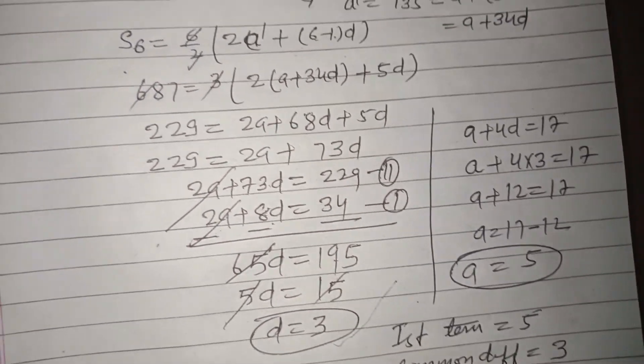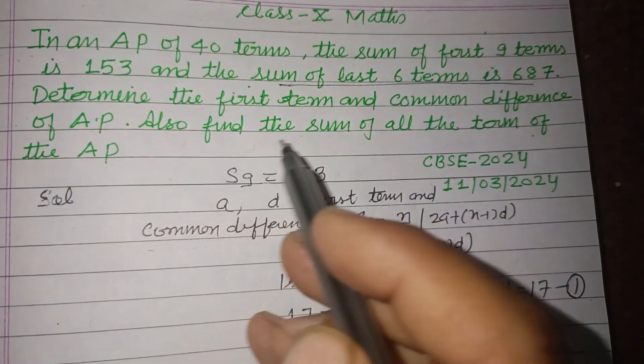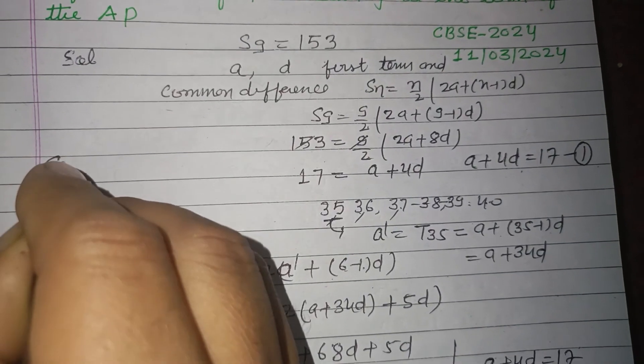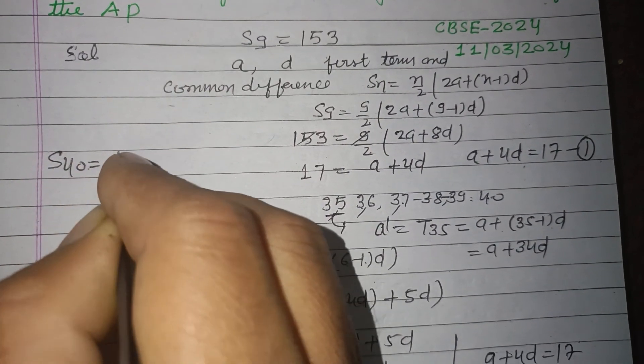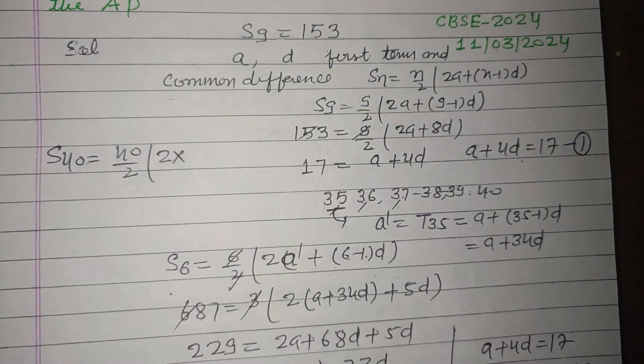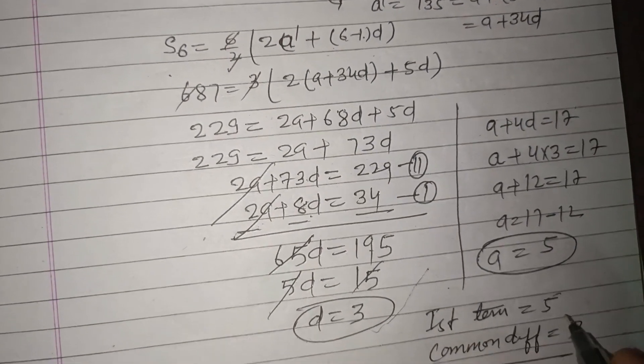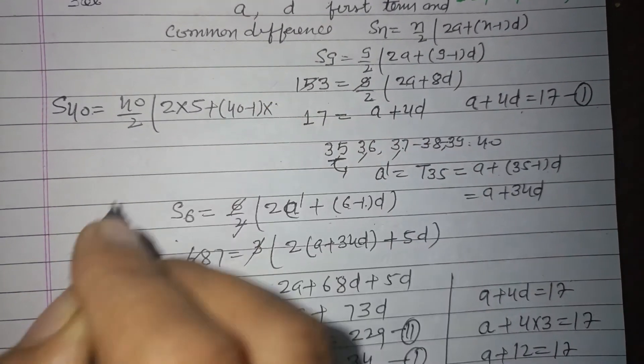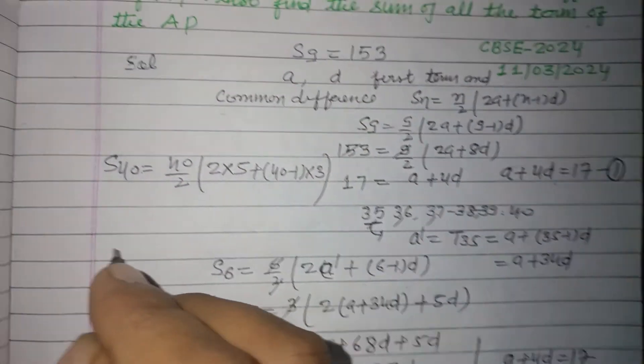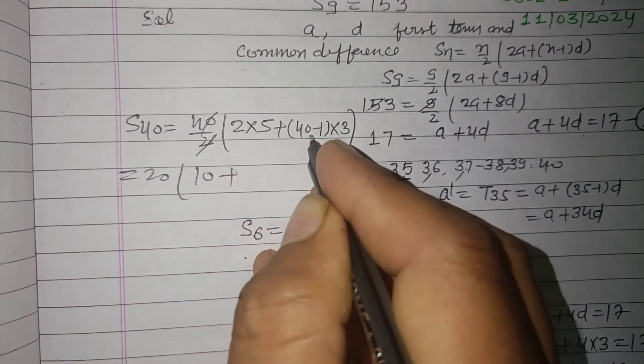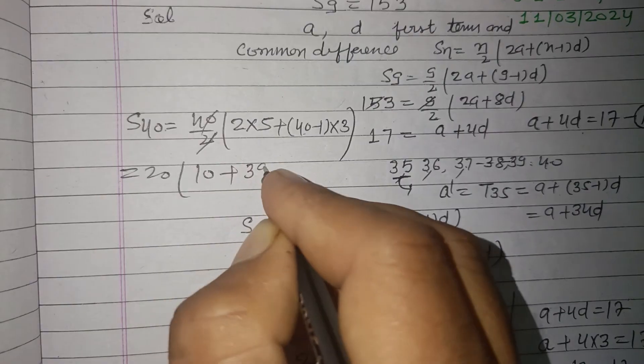Question is asking this and another point. Also find the sum of all the terms of the AP. So how many terms are there? That's 40 terms. So S40 equals 40 by 2 times 2A, A is obtained earlier which is 5, plus 40 minus 1 into D, D is 3. So this is 20 times 10 plus 39 into 3.